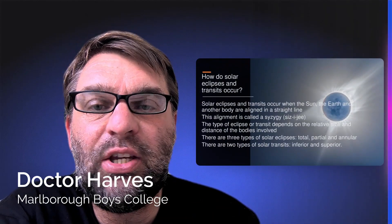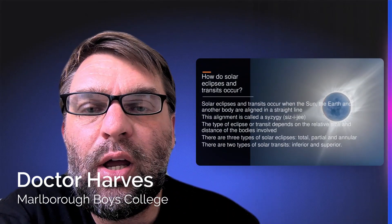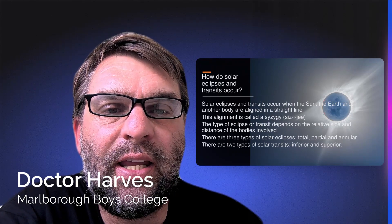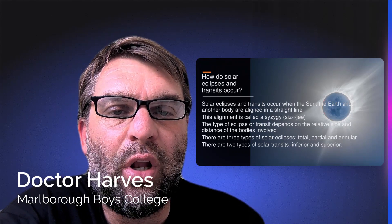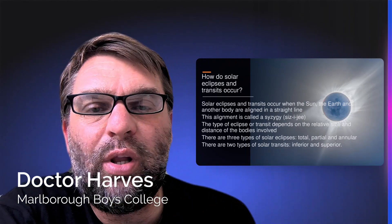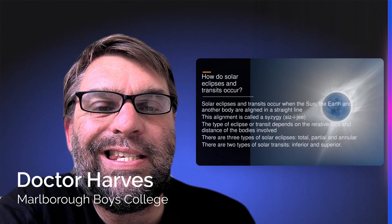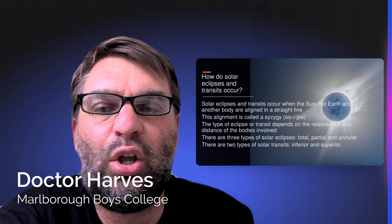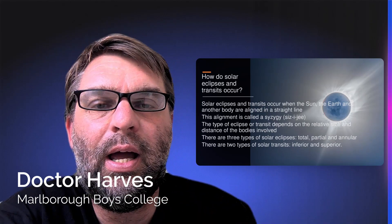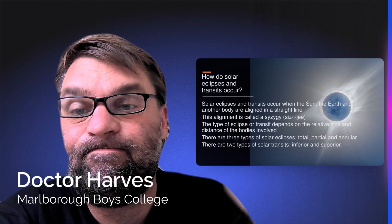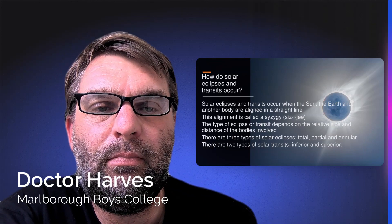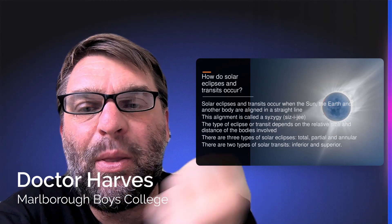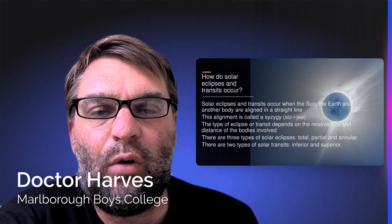So how do these transits and eclipses occur? A solar eclipse occurs when the Sun and the Earth are aligned in a straight line, and we call this a syzygy. A transit occurs when the Sun, the Earth, and some other body are in a straight line — also called a syzygy. It depends on the relative size of the object and the distance of the bodies involved.